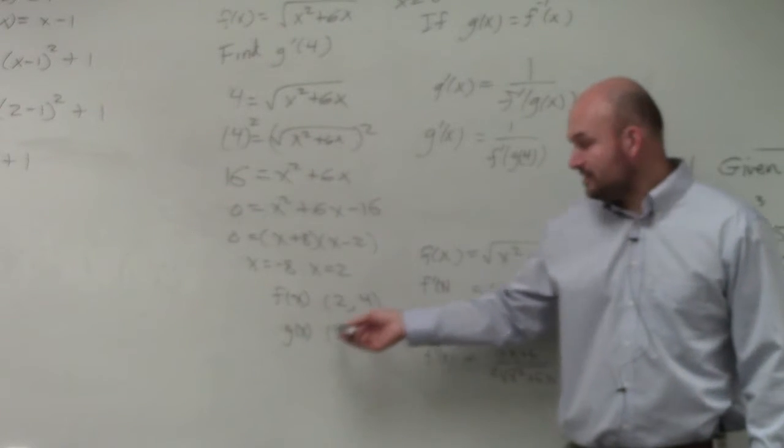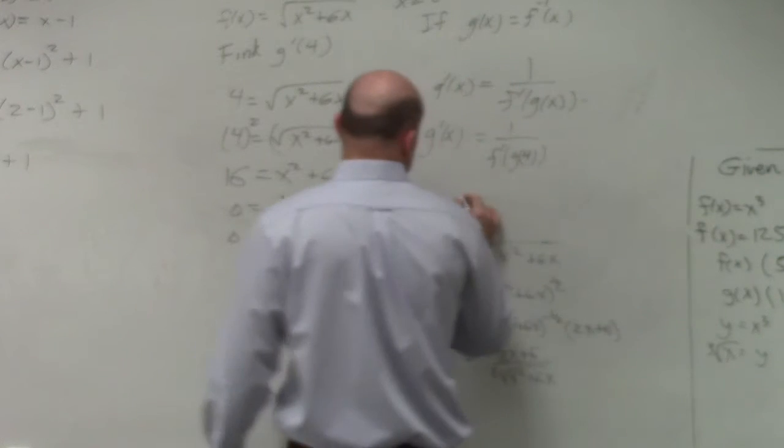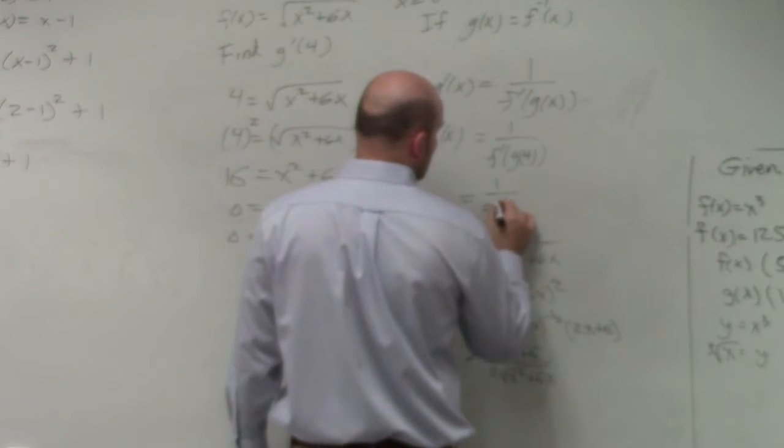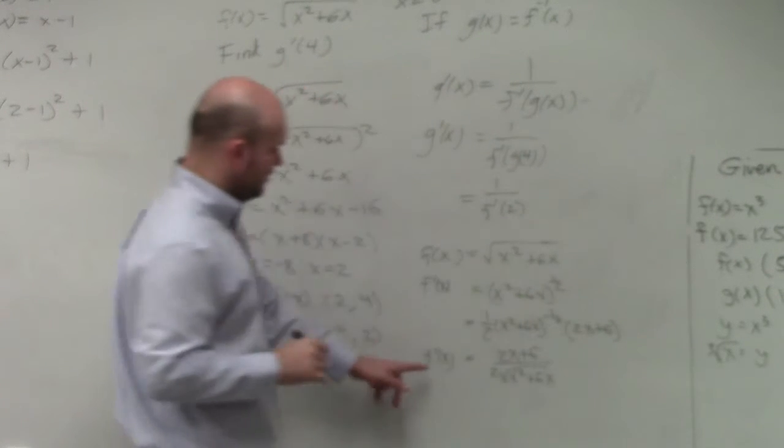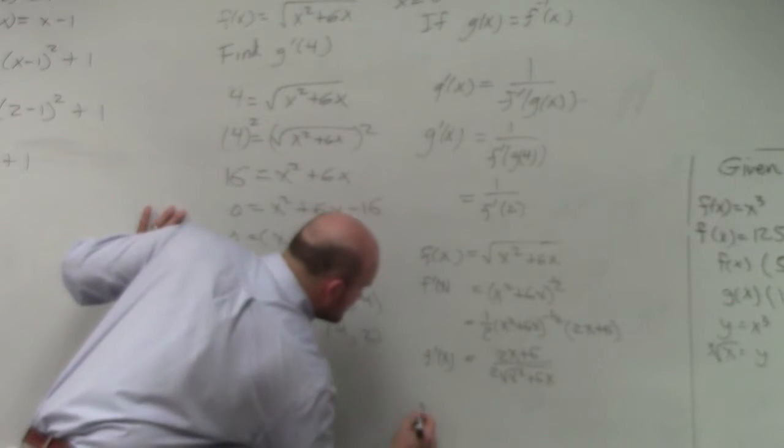g of 4, my output is going to be 2. So that's really 1 over f prime of 2. Well, let's figure out what f prime of 2 is.